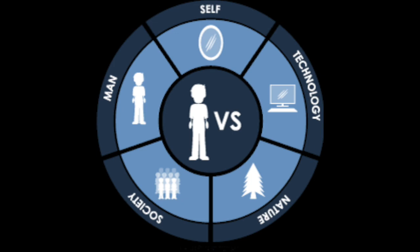After you establish the conflict, you determine the climax, or the turning point of the story. This is where your audience is able to ask the question: what happens next? After the climax, you have the falling action when the story winds down to the final element, and then the resolution or the conclusion.